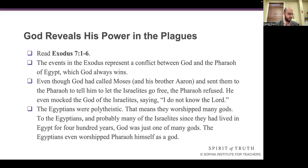Exodus chapter 7, verses 1 to 6: The Lord said to Moses, 'See, I make you as God to Pharaoh, and Aaron your brother shall be your prophet. You shall speak all that I command you, and Aaron your brother shall tell Pharaoh to let the sons of Israel go out of his land. But I will harden Pharaoh's heart, and though I multiply my signs and wonders in the land of Egypt, Pharaoh will not listen to you. Then I will lay my hand upon Egypt and bring forth my people, the sons of Israel, out of the land of Egypt by great acts of judgment. And the Egyptians shall know that I am the Lord.' And Moses and Aaron did as the Lord commanded them.